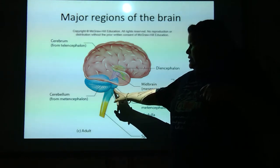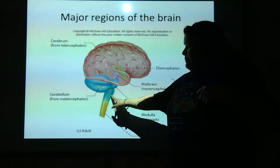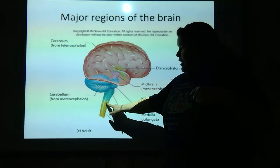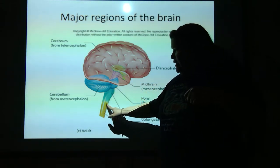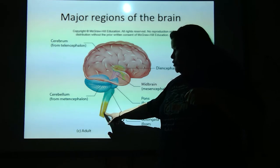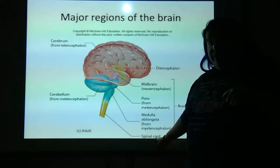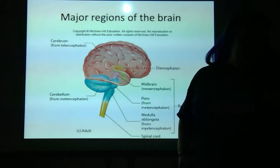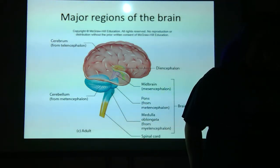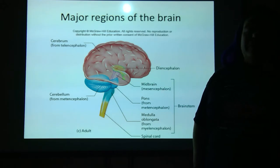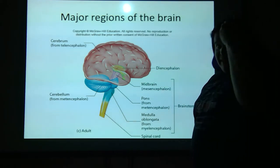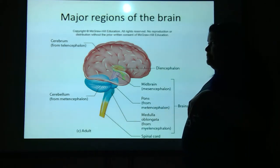As you can see, that medulla oblongata is actually continuous with our spinal cord. So here's a mid-sagittally cut brain.